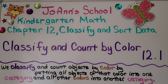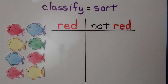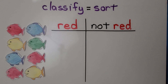Lesson 12.1: Classify and Count by Color. We classify and count objects by color by putting all objects of that color in one category and all other colors in another category. When we classify objects, we sort them into different sets by following a rule.